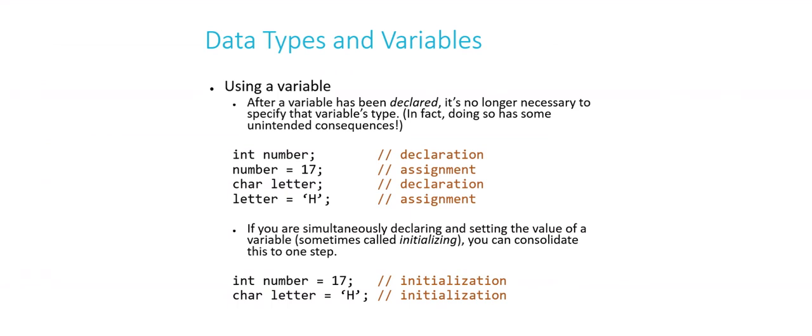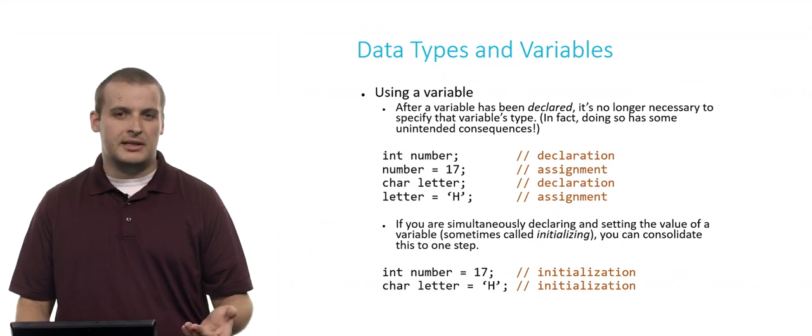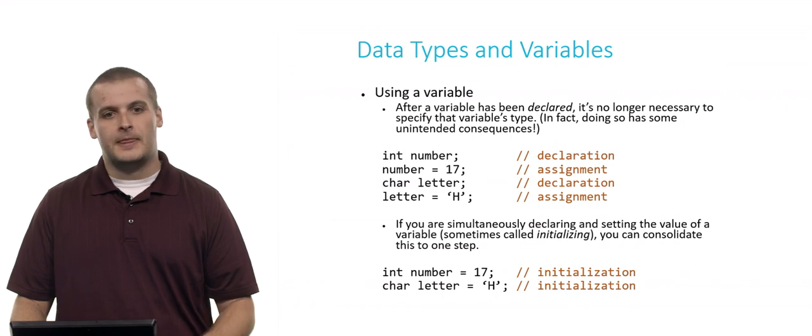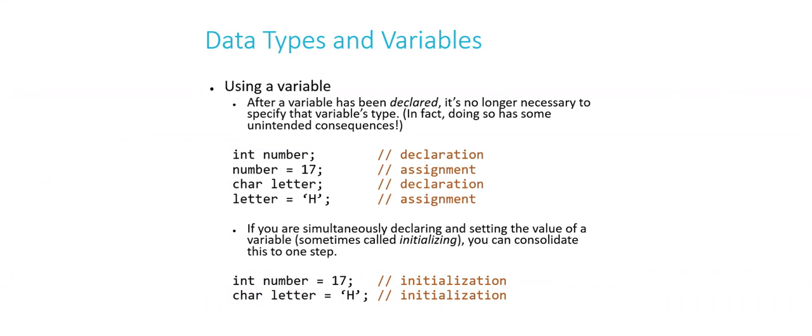Now, this process might seem kind of silly. Why are we doing this in two lines of code? In fact, there is a better way. Sometimes you might see this called initialization. It's when you declare a variable and assign it a value at the same time. This is actually a pretty common thing to do when you create a variable. Int number equals 17 is the same as the first two lines of code up above. The most important takeaway here is after we've declared it, notice I'm not using the data type again. I'm just saying number equals 17. Re-declaring a variable after you've already declared it can lead to some weird consequences. So just be careful of that.